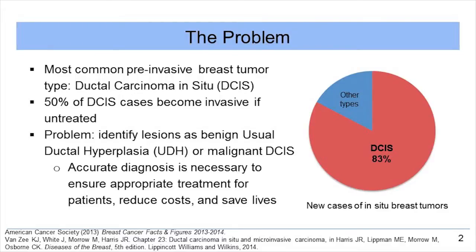Around 50% of these DCIS cases become invasive if untreated, so early detection is crucial. This detection is done through the identification of lesions as benign usual ductal hyperplasia, UDH, or malignant DCIS.